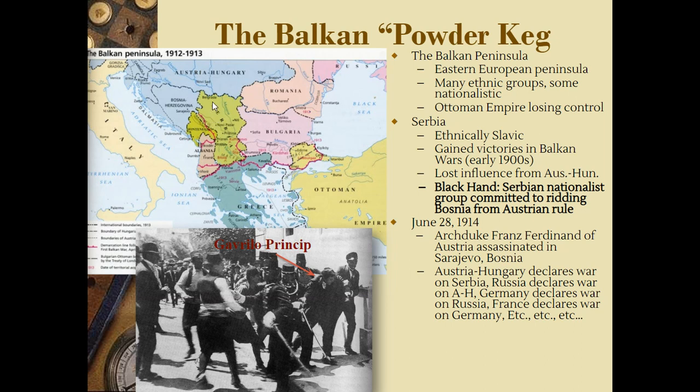Austria-Hungary basically vowed to prevent that from happening. So we have two opposing forces that share a border, creating a lot of tension. In Serbia, we also have a nationalist group called the Black Hand — they're really important to the cause of World War I. The Black Hand was a Serbian nationalist group committed to ridding Bosnia of Austrian rule.